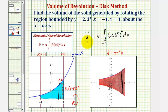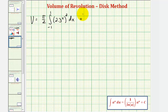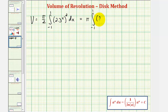So we have all the pieces we need. The volume is equal to pi times the integral of R of x squared, which would be 2.3 raised to the power of x, squared, integrated with respect to x from negative one to one. Now notice how we have powers to powers here, so we'll multiply the exponents and write this as 2.3 raised to the power of 2x.